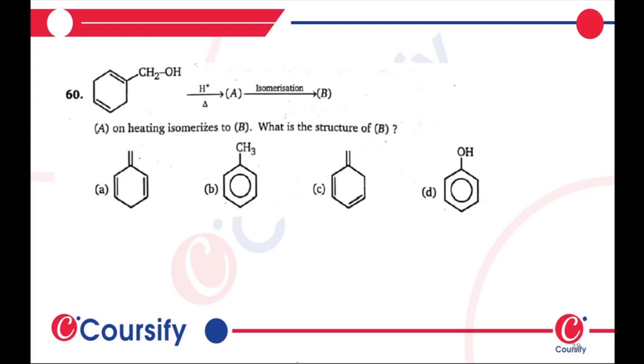What is the question? Question 60: Benzoyl alcohol with H+ will attack on that substance and we will get a product. So we will get the isomerization on heating, isomerizes to B. What is the structure of B? We have to find out the structure of B simply.